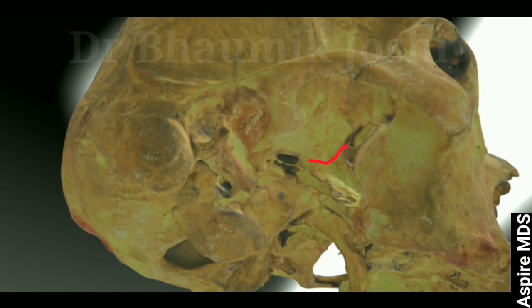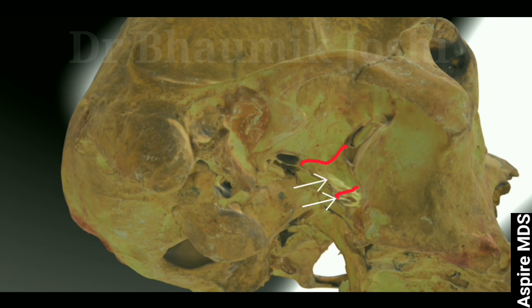The fracture line then crosses the maxilla and fractures the pterygoid plate at its base. Remember: in LeFort I it fractured the pterygoid plate at the inferior one-third/superior two-thirds junction; in LeFort II it caused fracture at the middle part of the pterygoid plate; and in LeFort III it causes fracture at the base of the pterygoid plate.